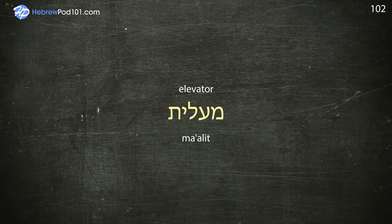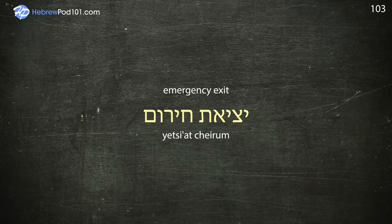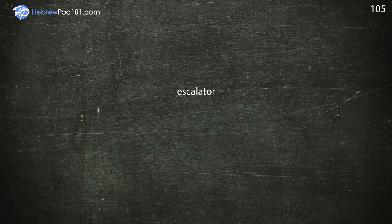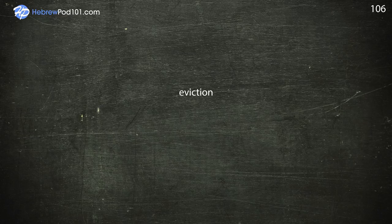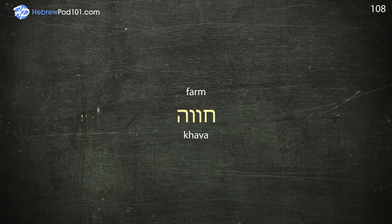Emergency exit. Entryway — K'nisa. Escalator — Madareggotes Naut. Fan — Meavrer. Farm — Chava. Faucet — Beres. Fence — Gader.